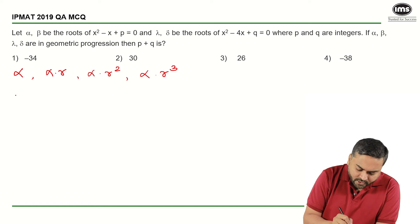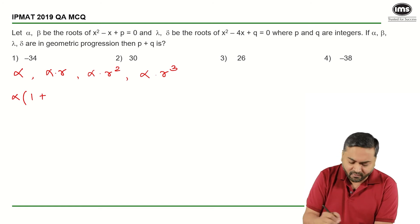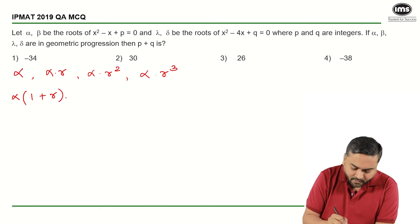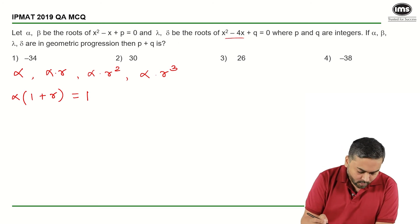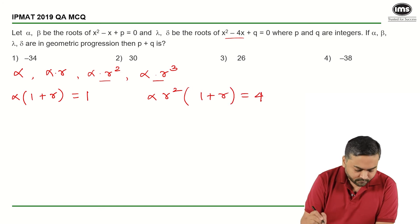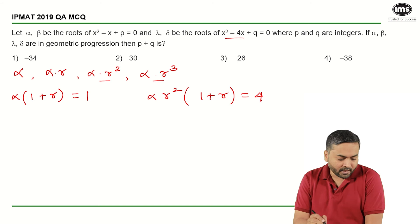From the first equation, I get alpha into 1 plus R is equal to 1. From the second equation, I can take R square common from these two terms and I will be left with alpha R square times 1 plus R is equal to 4.